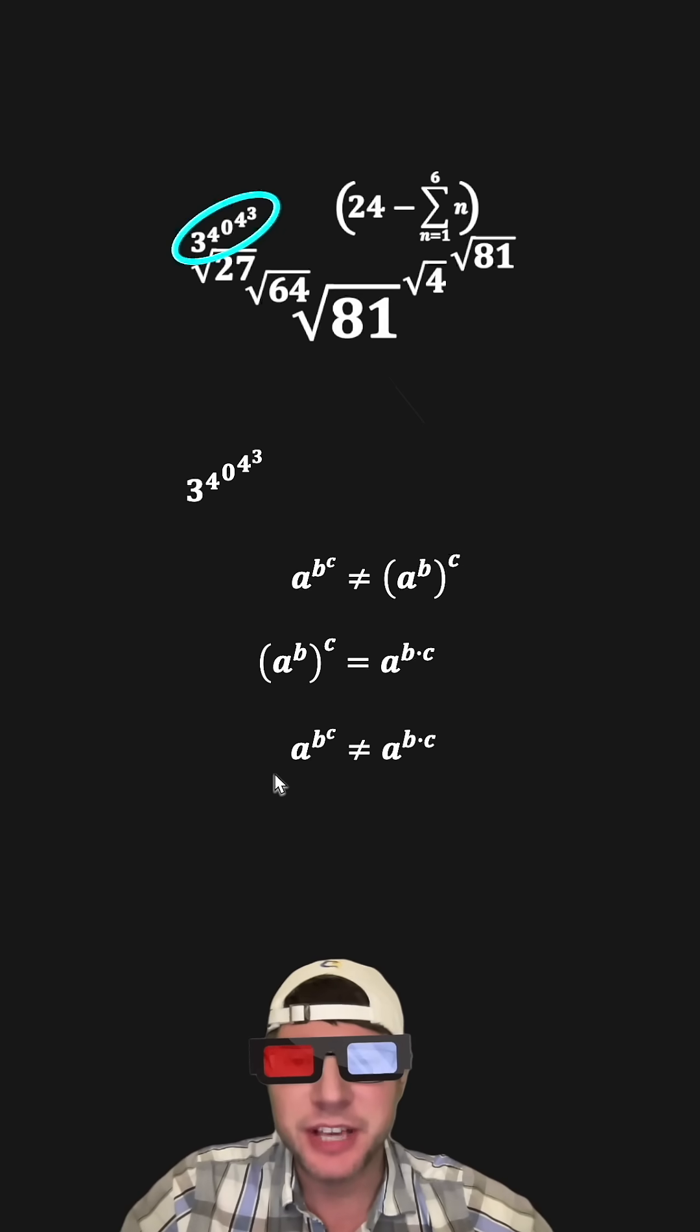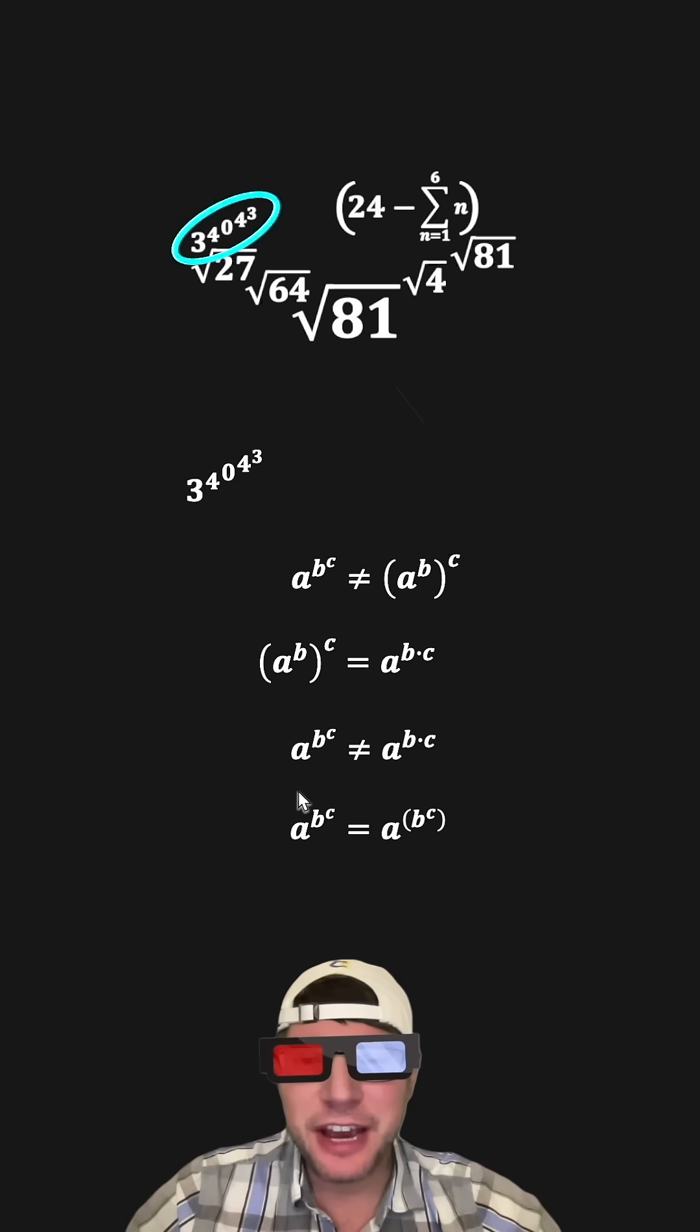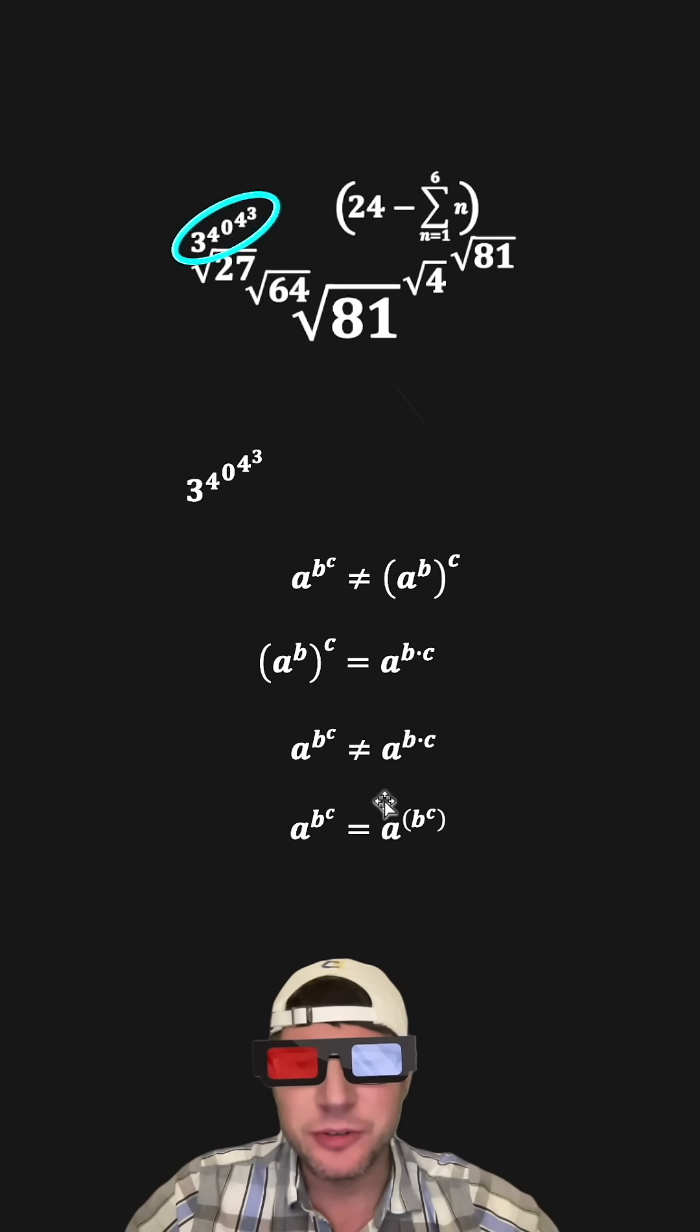But in a power tower, which is A to the B to the C, you don't multiply the exponents. The correct way you handle A to the B to the C is you do B to the C first and then do A to that power.